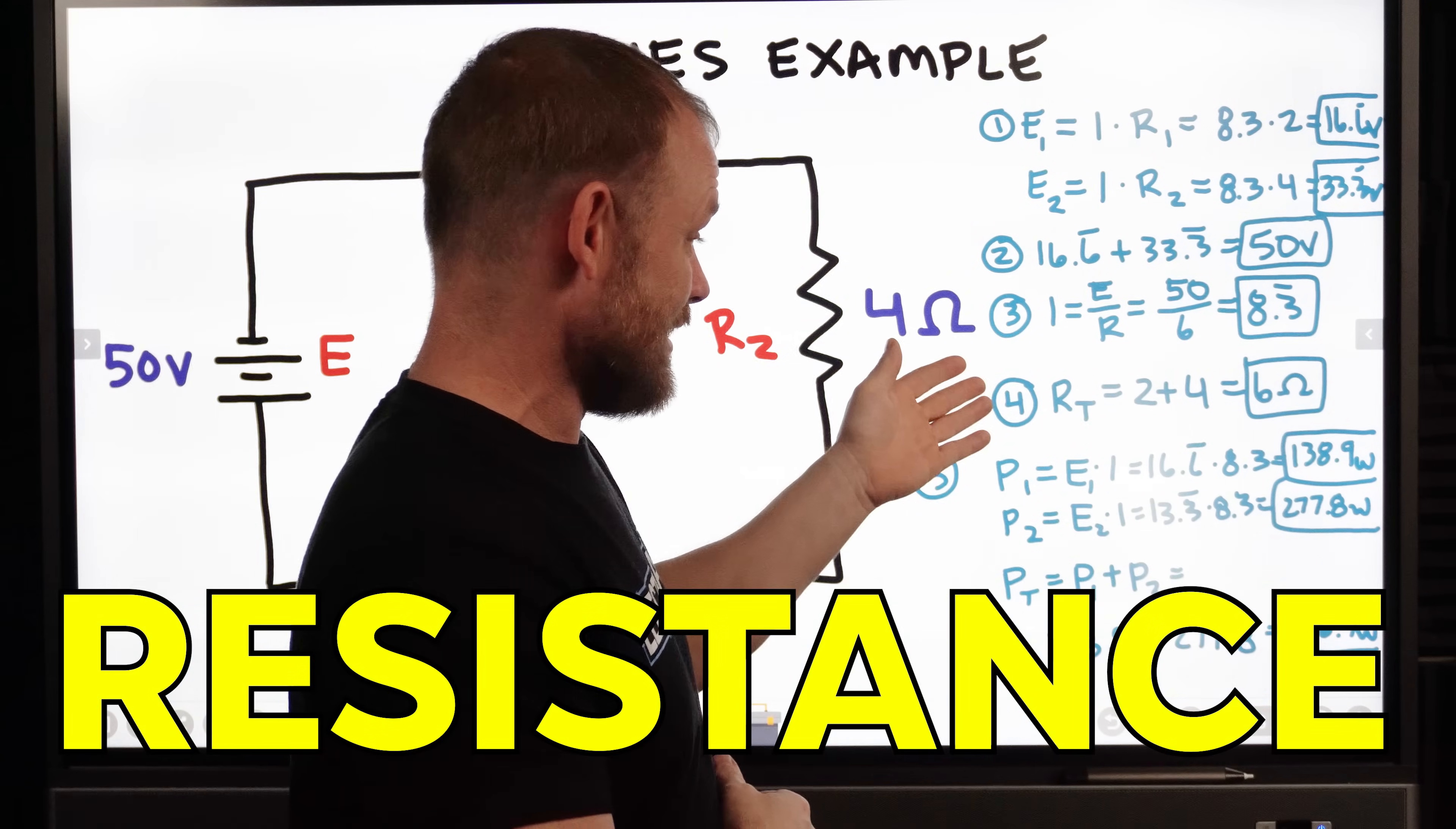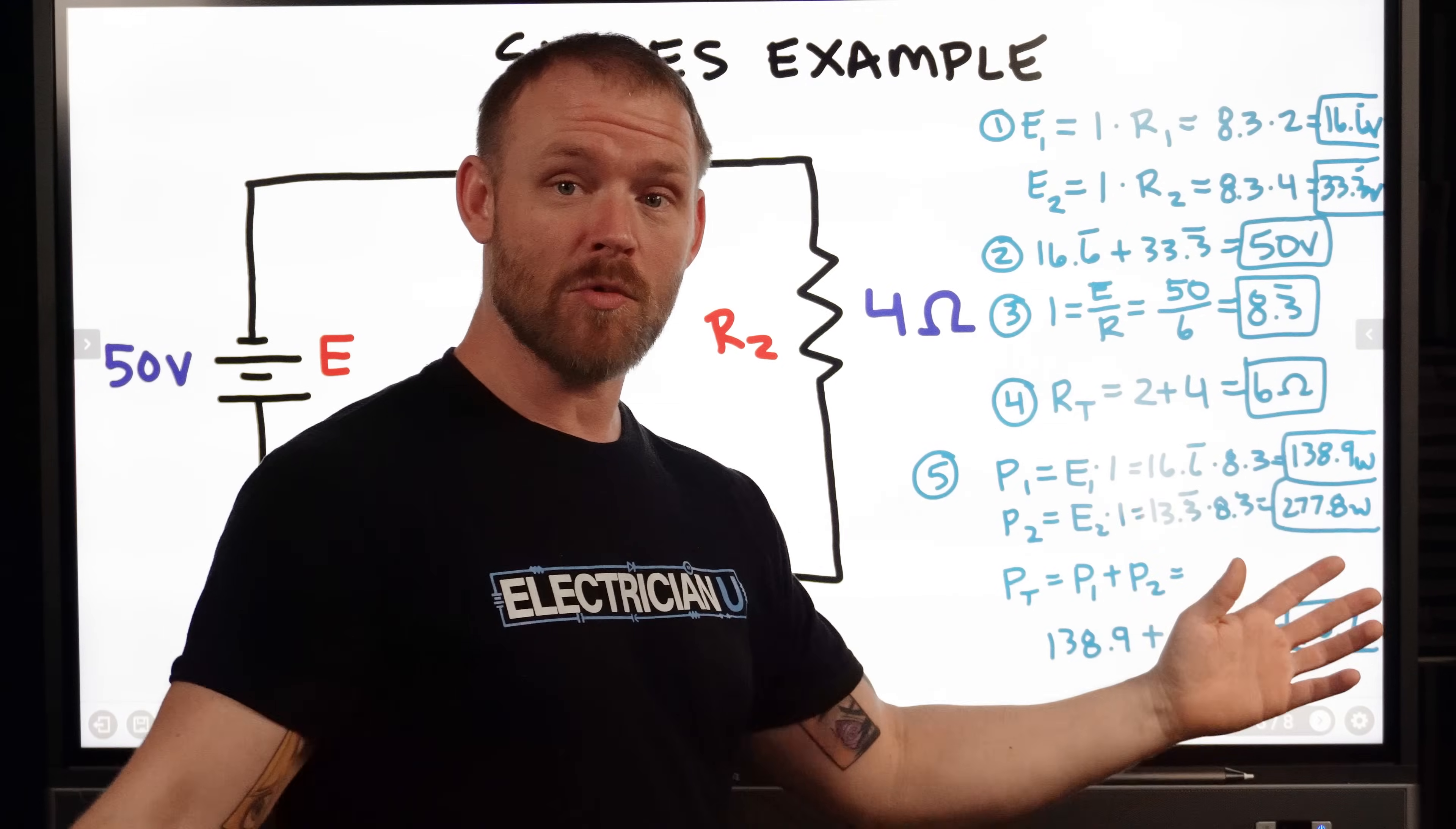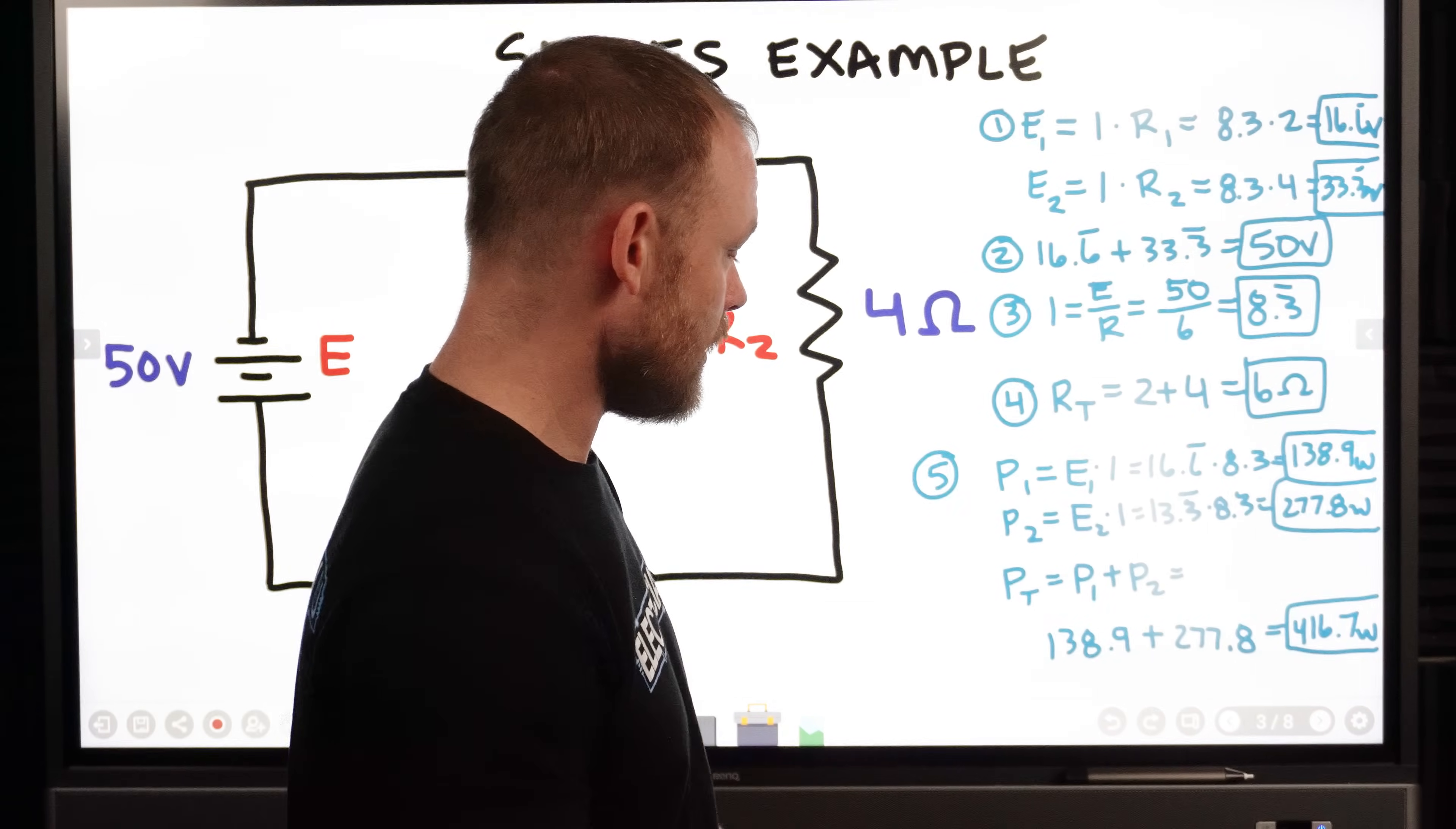Next is resistance. So resistance, we need to figure out our total resistance. We have one, we have another one. The awesome thing about series circuits is you just add them all together. If you have like 15 resistors throughout the circuit, you just add them all together. And whatever the total number is, that's your total resistance. So it's pretty easy to solve that. We just said that in the last example, you take RT or what is the total resistance? And then it's R1 plus R2. So that's six ohms.